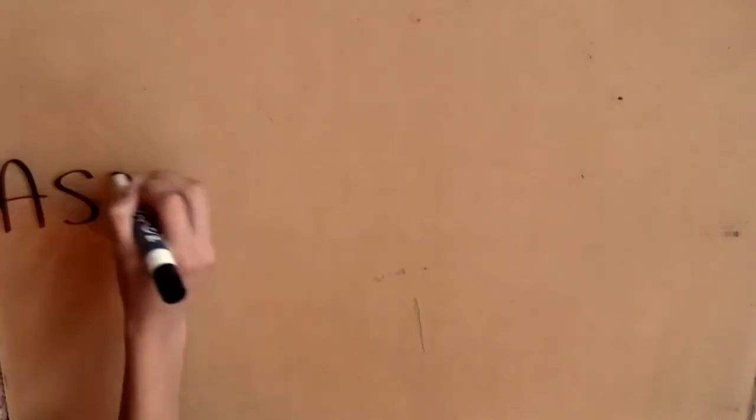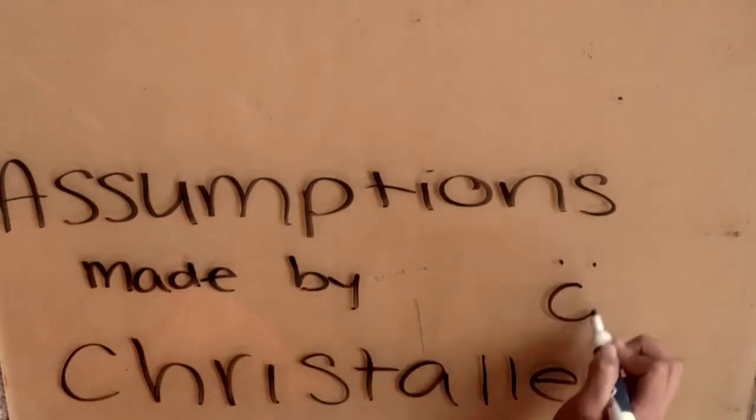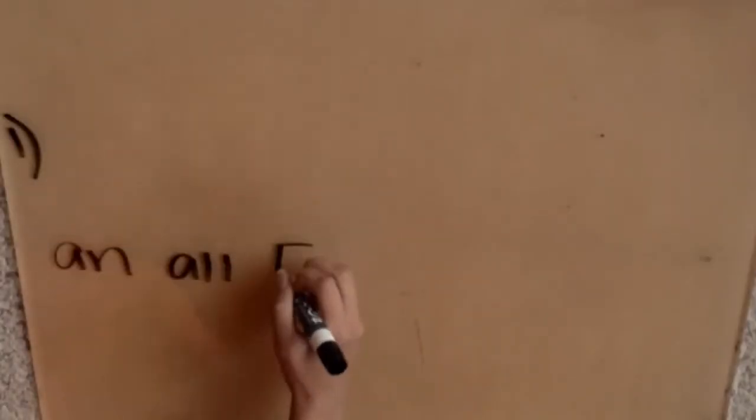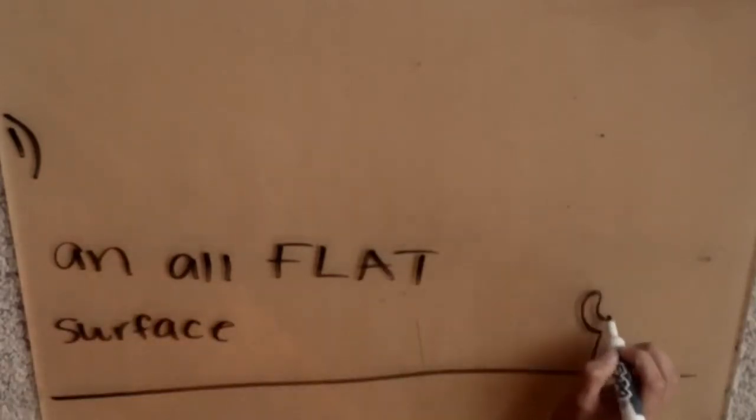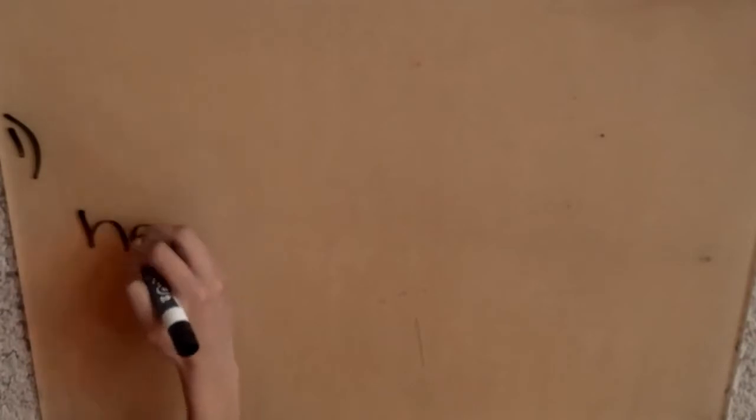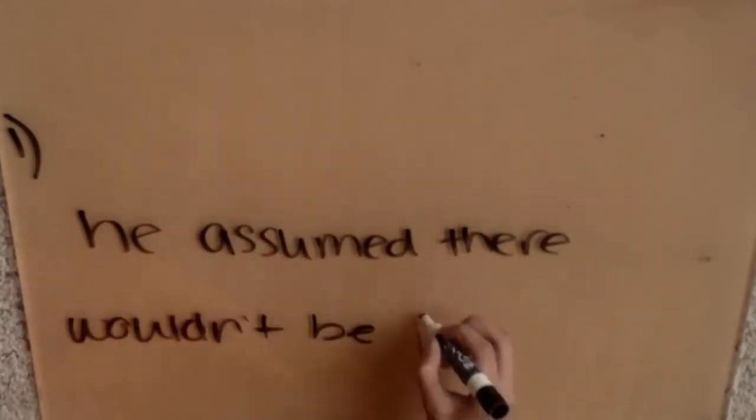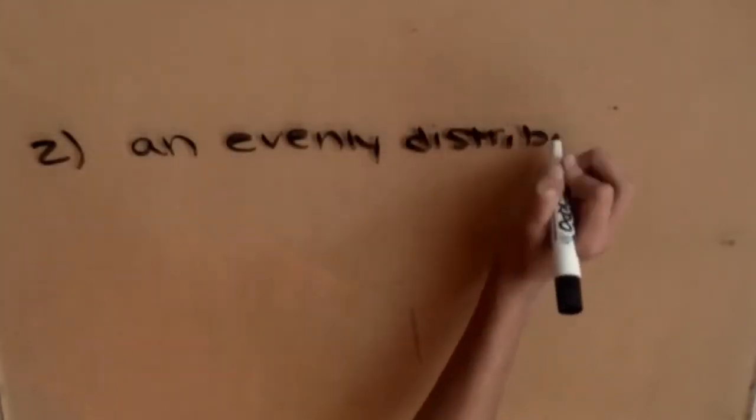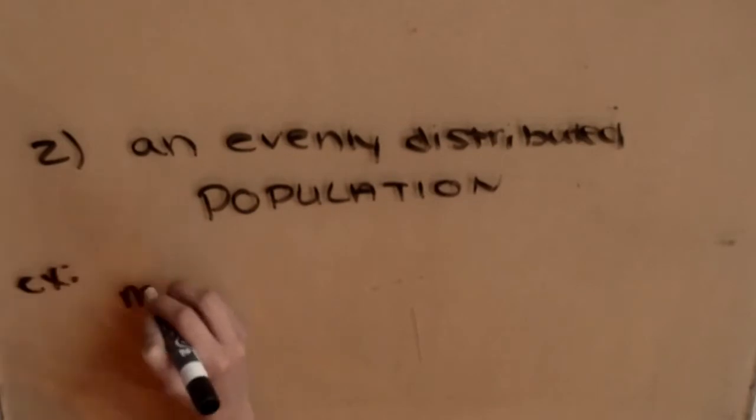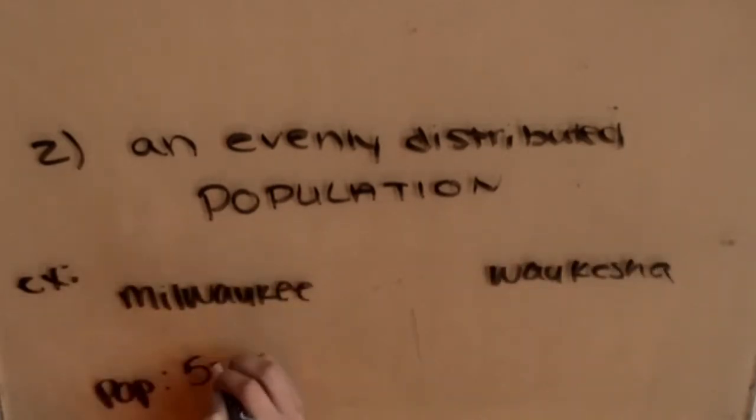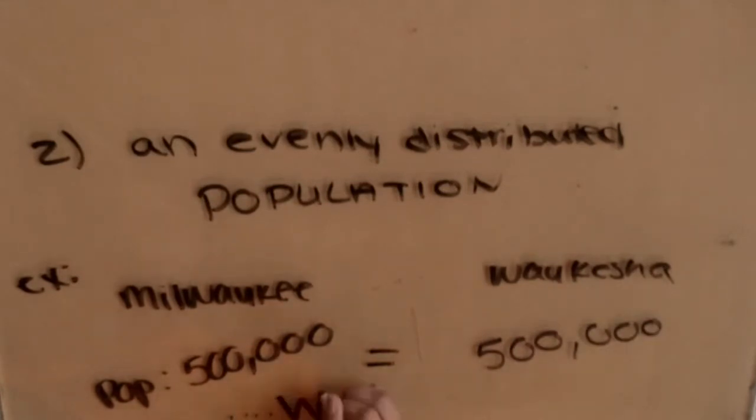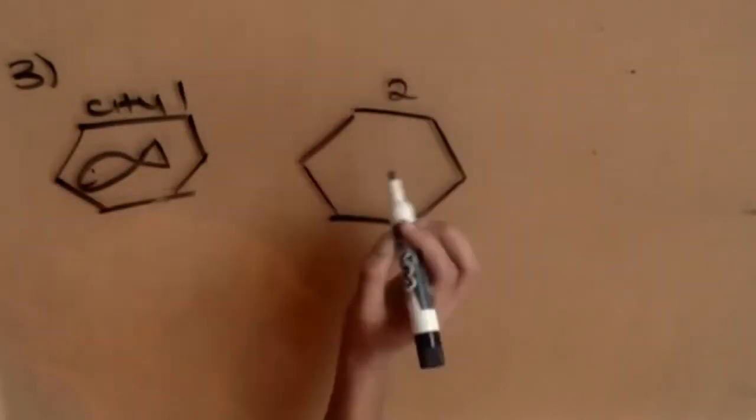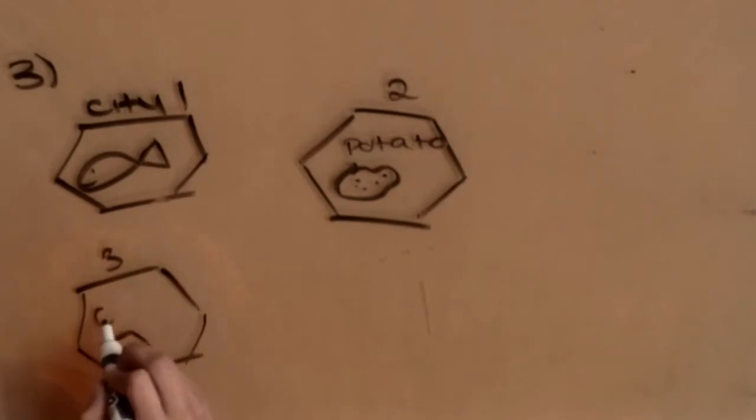While making his theory, Christaller made a bunch of assumptions about the land. The first assumption was that all land surfaces were flat. He also assumed that populations would be distributed evenly in all cities. The third assumption was that all cities had the same resources, which is clearly not the case.